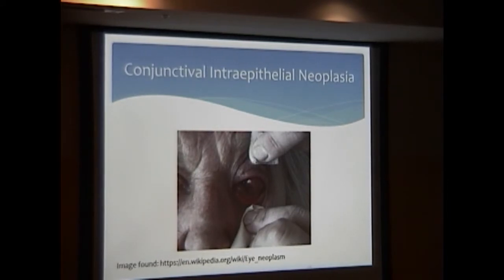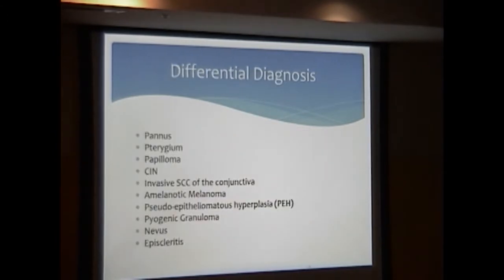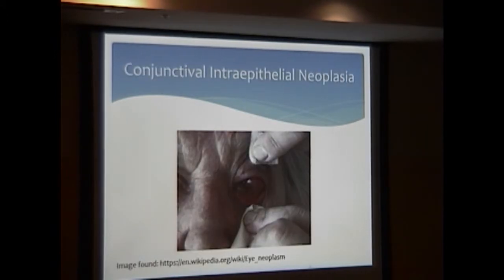So this is a picture in the public domain of conjunctival intraepithelial neoplasia. I wanted to show a picture of something that had been diagnosed before treatment, and I have a picture of our patient in subsequent slides. Can anybody comment on the differential diagnosis of what you're likely to think if you see something like this in the clinic?